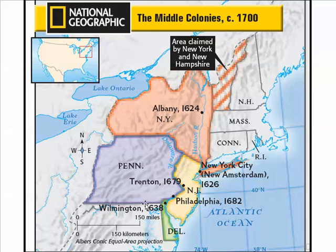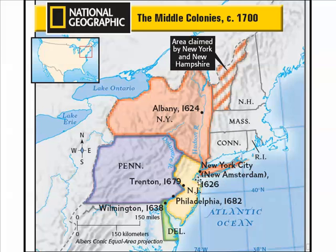We're going to talk about Pennsylvania and why it was settled. But let's look at New Amsterdam here, what will later become New York City. The Hudson River is very important to understanding why New York City becomes one of the largest cities in the United States. And this large harbor right along the Atlantic makes it a vital place for trade.